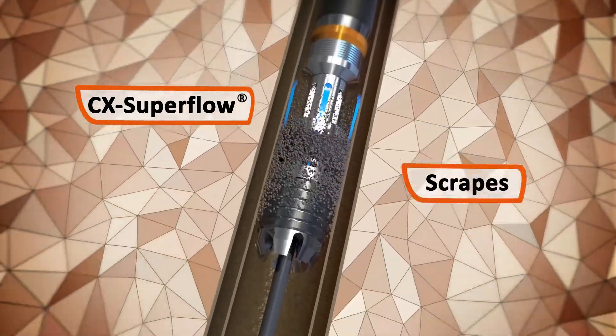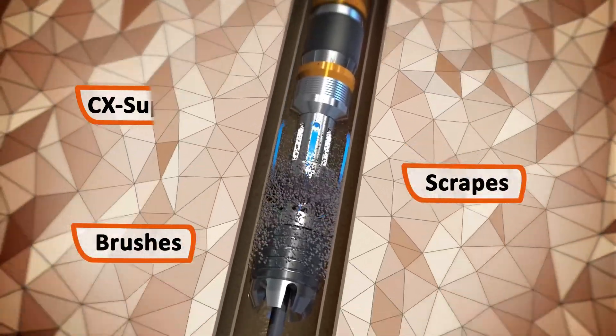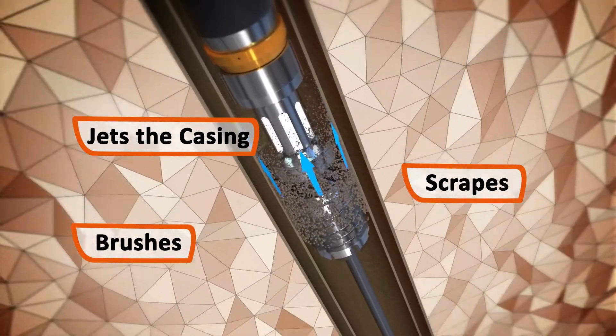The CX Superflow scrapes, brushes, and jets the casing ID as we run in hole.